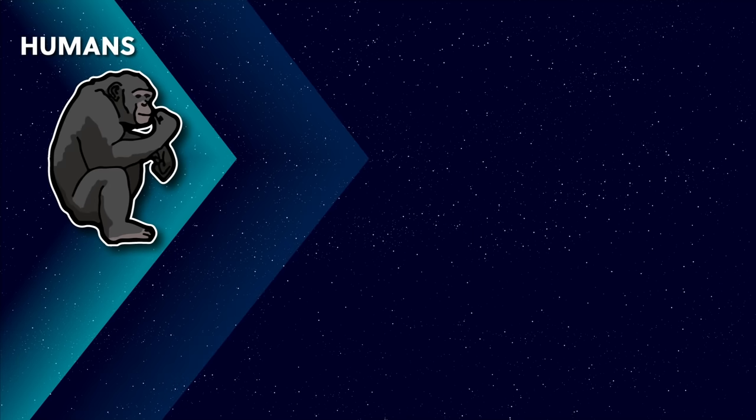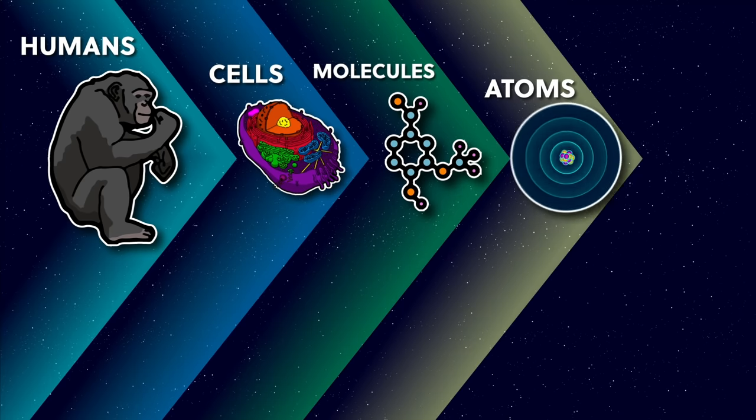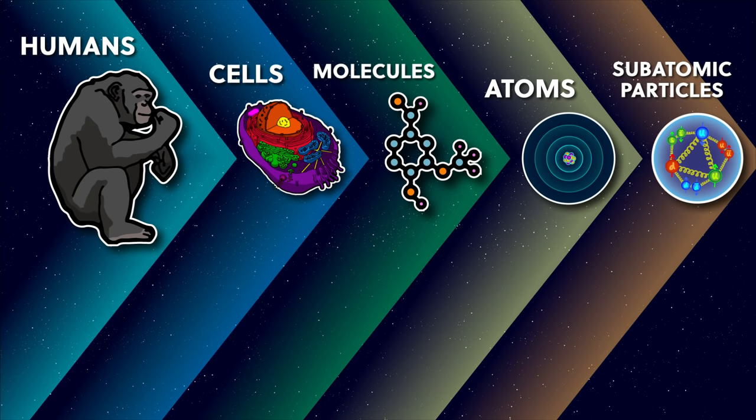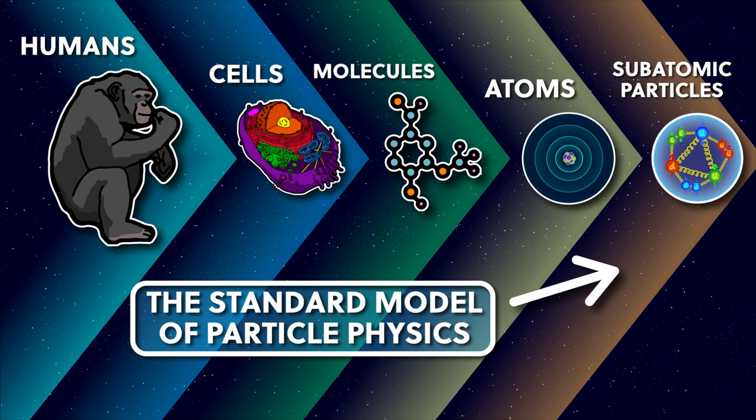If we peel away the layers of complexity from humans, to cells, to molecules, to atoms, to subatomic particles, we reach the standard model of particle physics, which is our best description so far of the fundamental machinery of the universe. But it doesn't really answer why anything exists. But it does describe what exists and how it behaves, and that's what we'll be discovering in this video.